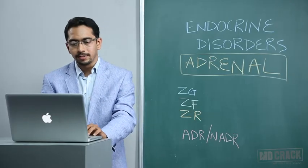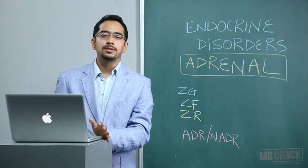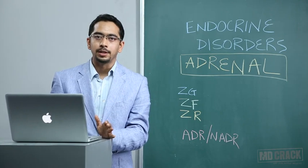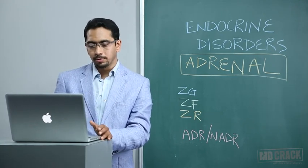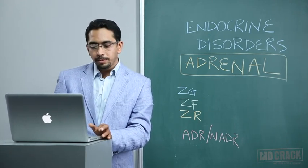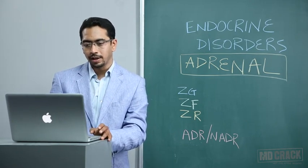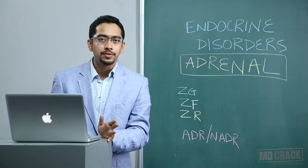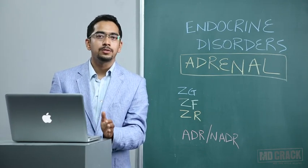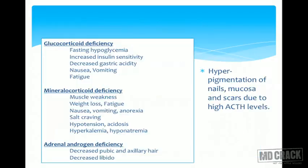The causes of Addison's disease in developing countries like India: the most common cause is infectious — tuberculosis is the main cause. Meningococcal sepsis and histoplasmosis are also important. Autoimmune causes include isolated autoimmune or autoimmune polyendocrinopathy syndrome type 1 and 2. Genetic syndromes like adrenoleukodystrophy and Triple A syndrome are important to remember for multiple choice questions. Features are divided into glucocorticoid deficiency — fasting hypoglycemia, increased insulin sensitivity, decreased gastric acidity, nausea, vomiting, and fatigue.